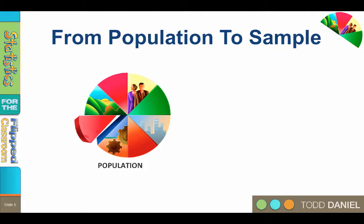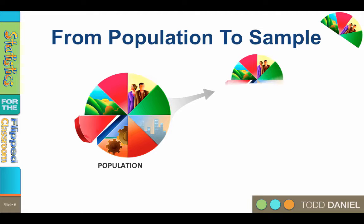We want to determine truths about a population, but we only have access to a sample. We study the sample in hopes of generalizing what we learn back to the population. But of course, we can only generalize if our sample is representative of the population — that is, the sample should have the same characteristics as the population.